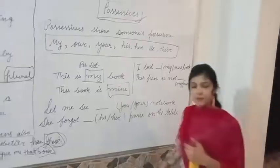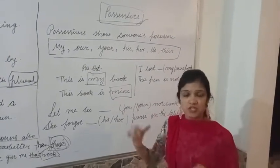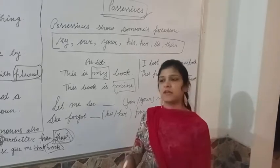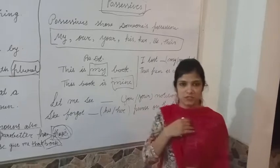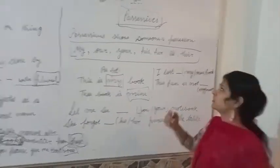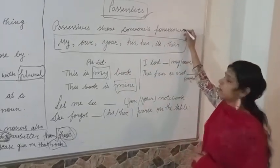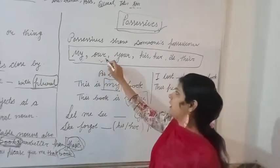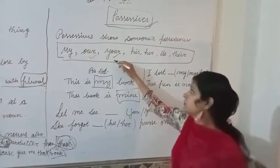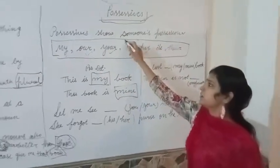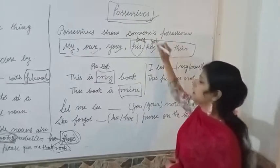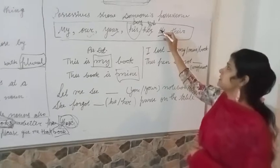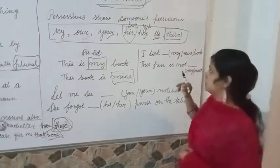Now we are going to start the next determiner, that is possessive. As the name specifies, possessive shows that something belongs to someone — this object belongs to me, or to you, or to another person. Possessive determiners show possession. They are: my, your, his, her, its, and their.